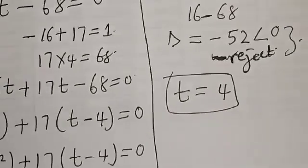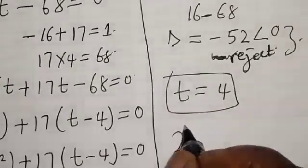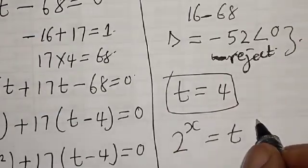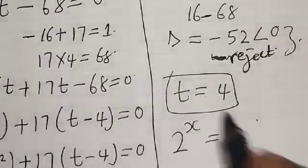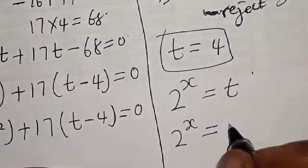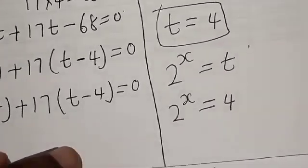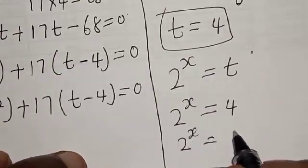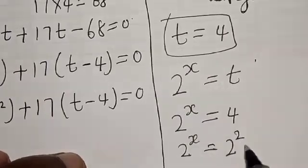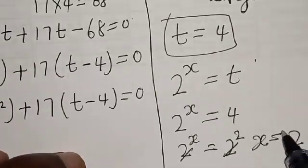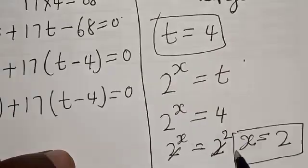And remember that we said 2 raised to the power x is equal to t. And we know our t to be equal to 4. Then we have 2 raised to the power x is equal to 4. Now, 4 is the same thing as 2 squared. They have the same base, so the bases cancel. Therefore, x is equal to 2. We now know the value of x, which is equal to 2.